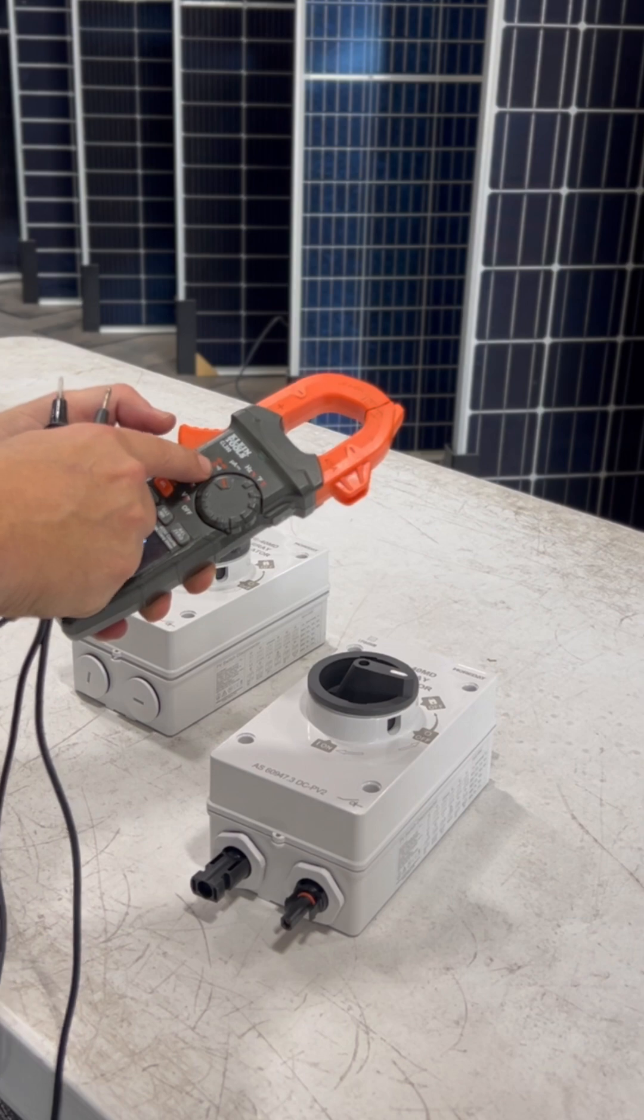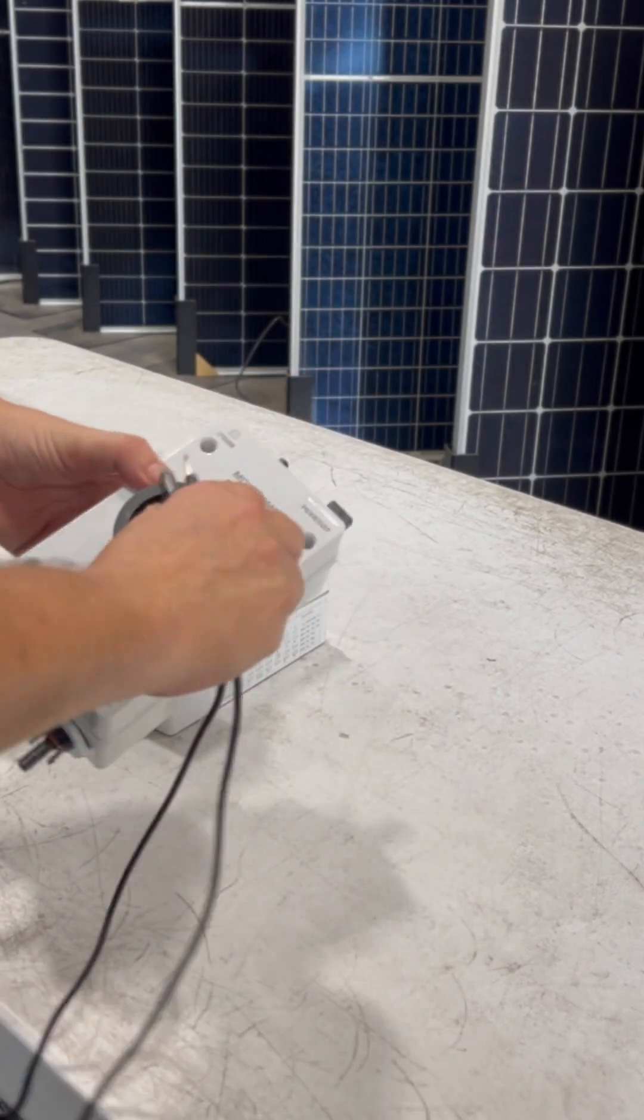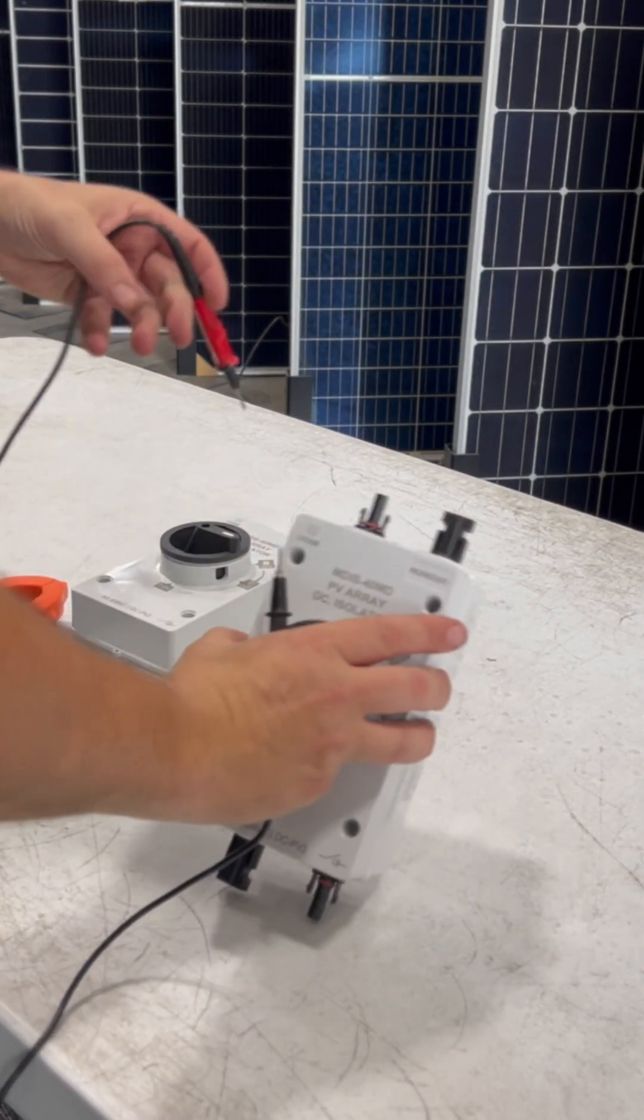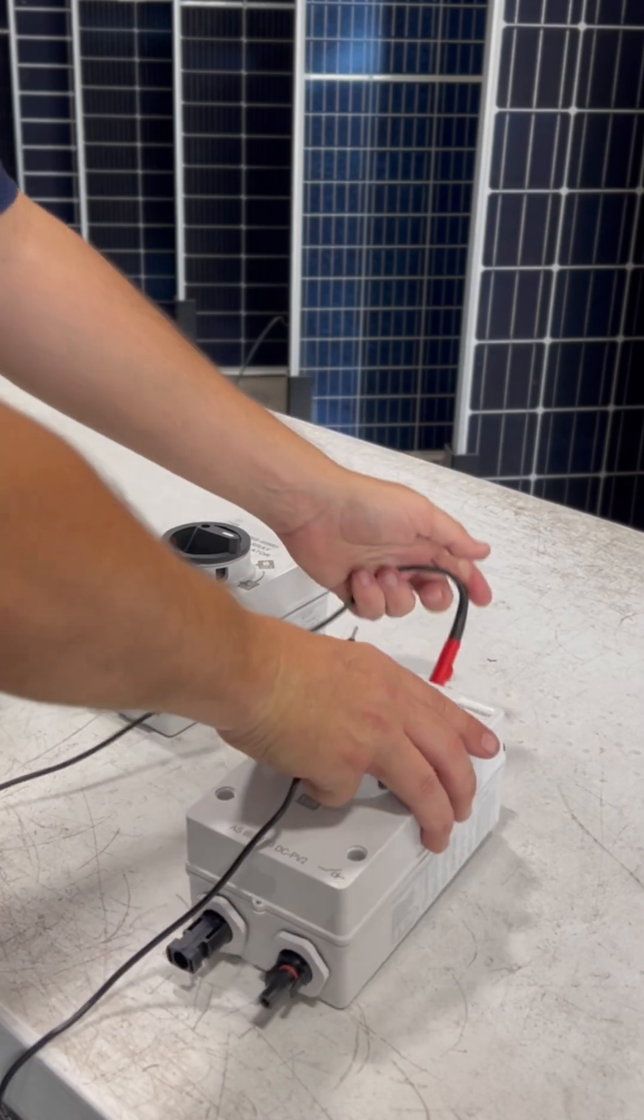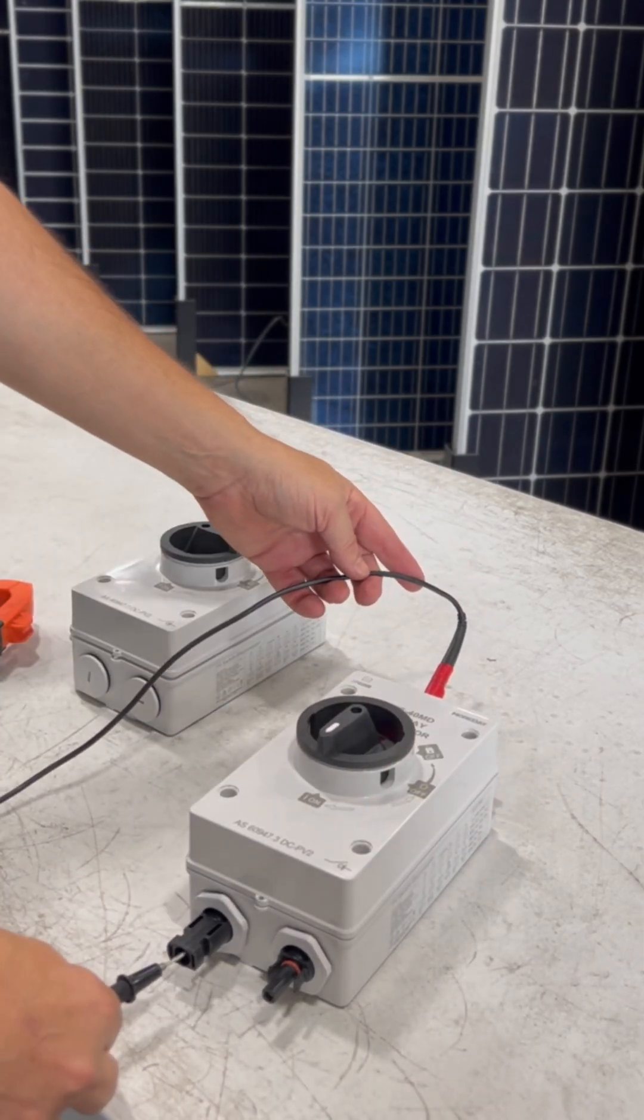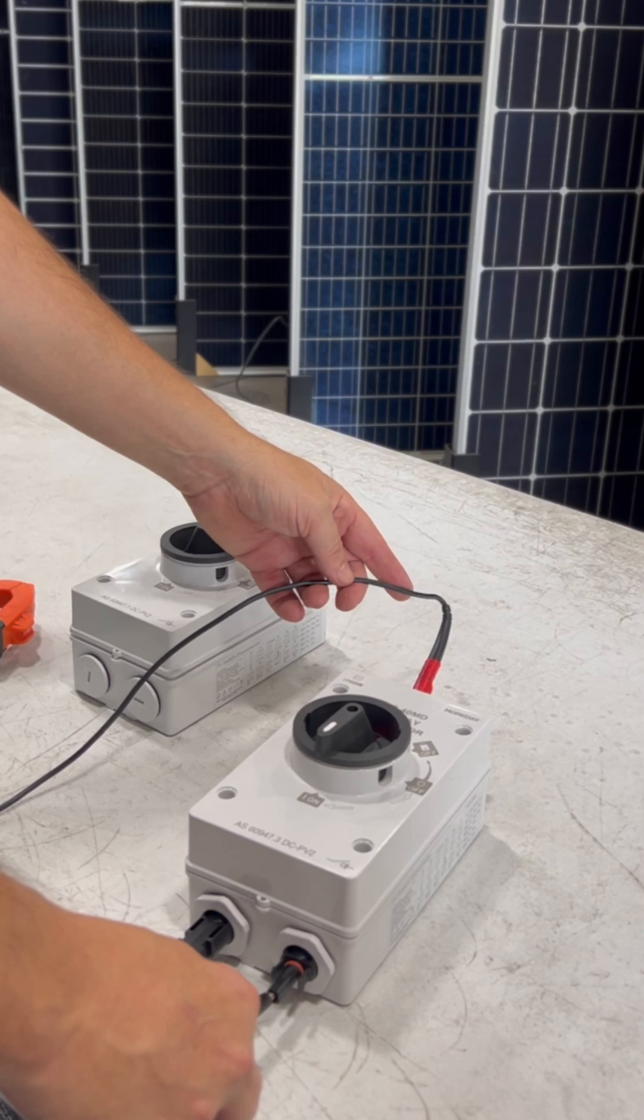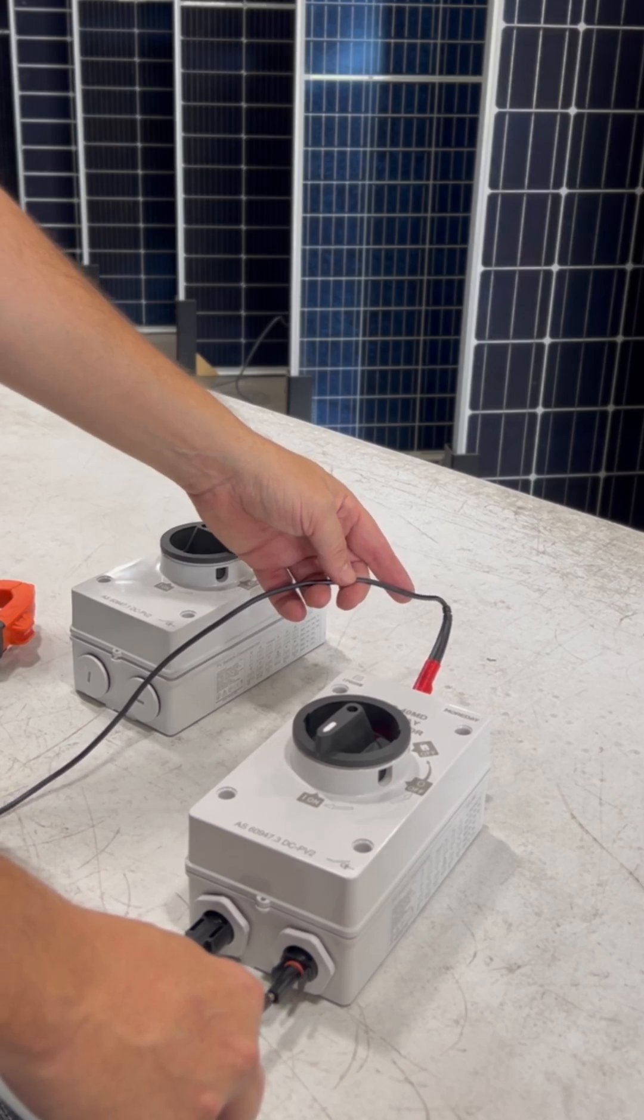Set your meter to continuity test, then switch the disconnect to the on position. Starting with the input at the top, check which it connects to at the bottom. On this side, we have continuity. On the other, no continuity or no tone from the meter.